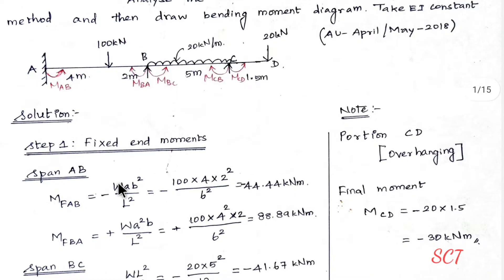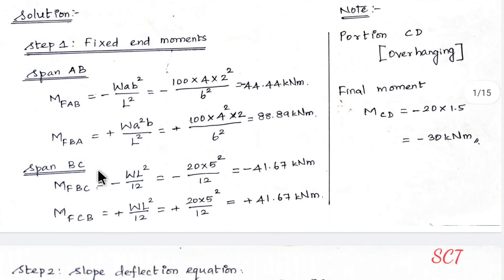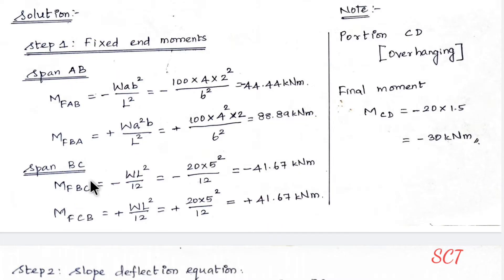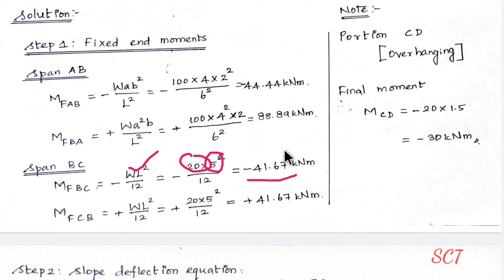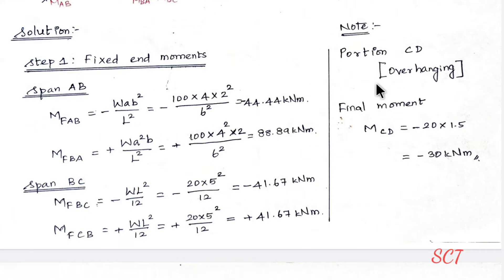Next is Span BC. For UDL, the fixed end moment formula is W·L² divided by 12. Load is 20 kN/m and L is 5 m, giving minus 41.67 and plus 41.67 kNm.